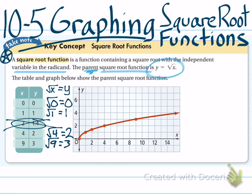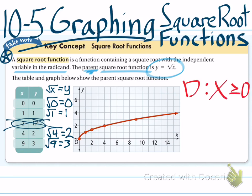As you can see, the points are plotted, and this is how the square root function gets its basic structure. One thing to note: the domain of this function. Its domain is x is greater than or equal to 0. Remember, the domain is all of the x values that the function could use.